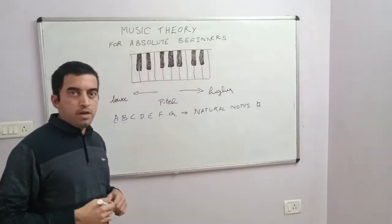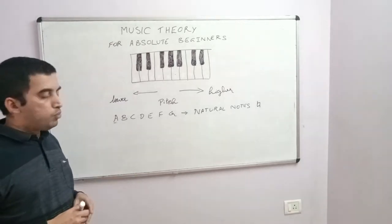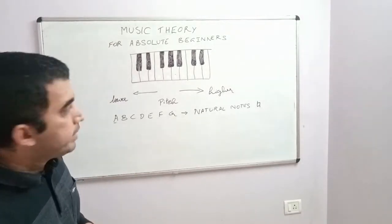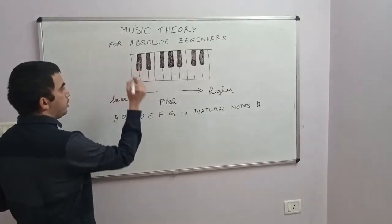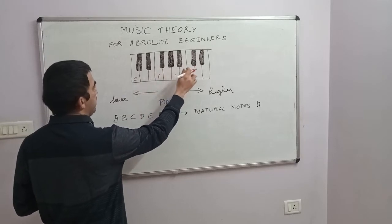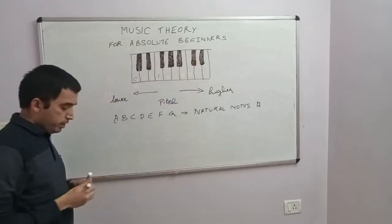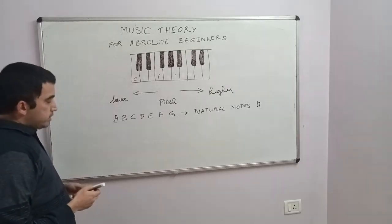Hello everybody, in the last class we understood how to name the white keys. So to just have a quick recap, you have C, D, E, F, G, A, B, and then we go back to C. We call them natural notes.